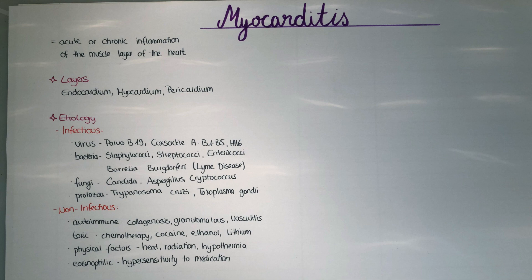Then different bacteria like Staphylococci, for example Staphylococcus aureus, Streptococci like Streptococcus viridans — which we also talked about for endocarditis — different Enterococci, and also Borrelia burgdorferi, which is the causative agent for Lyme disease. Lyme disease is a tick-borne disease, recognizable by the red ring around the area where the tick was biting.